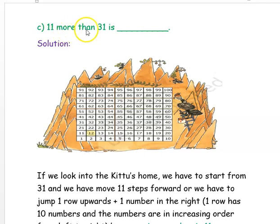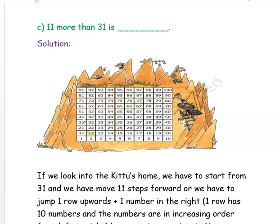The next question is: 11 more than 31 is ___. We start from the number 31, and since it is more than, we go forward — we have to add. Now 11 can be written as 10 plus 1. For 10, we jump 1 row down; for 1, we move 1 number to the right because numbers increase in the right direction. So 31 plus 10 means jumping 1 row — that gives 41. Then adding 1 more means moving right one number, giving 42. So 11 more than 31 is 42.